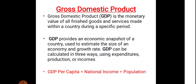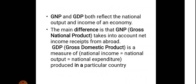A very important formula, which is also important for per capita income: if you divide national income by population, you get GDP per capita. Now GNP and GDP both represent the output and income of an economy.